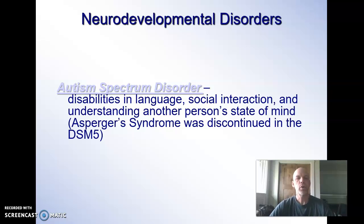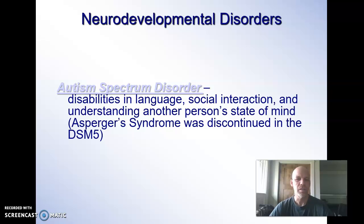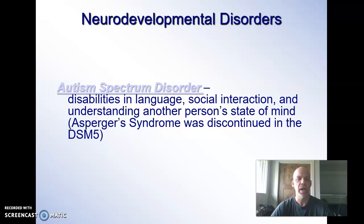Autism Spectrum Disorder. Most people have heard of this idea of the spectrum of autistic symptoms. One of the terms that was discontinued seven or eight years ago when the DSM-5 came out was the term Asperger's. They don't use Asperger's syndrome anymore — it's been folded into part of the autism spectrum. Symptoms often include disabilities in language and social interactions. It's very difficult for folks with autism to read the emotions of other people on their faces, going back to that theory of mind — understanding somebody else's state of mind is very difficult for somebody on the autism spectrum.